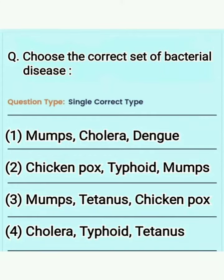The question asks you to choose the correct set of bacterial diseases. The first option is mumps, cholera, and dengue. However, mumps is a viral disease — it is an infection of the parotid gland caused by paramyxovirus. Since the question asks for bacterial diseases, this option is eliminated.